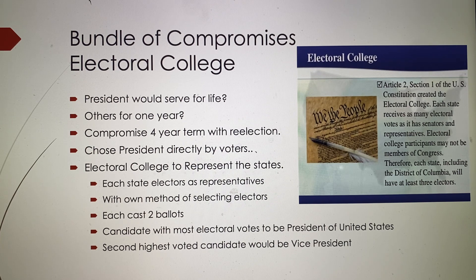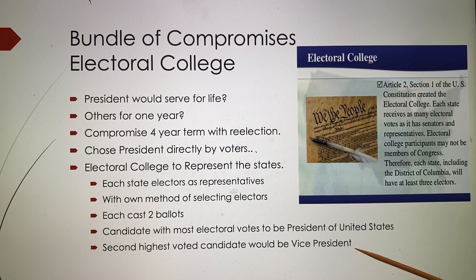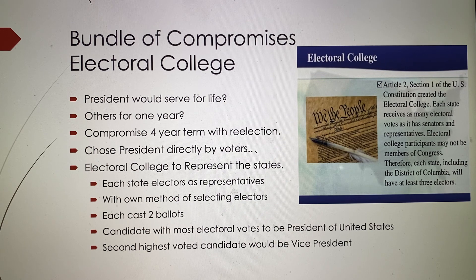The second-highest candidate would become vice president — a system that no longer works today. It led to situations like John Adams as president and Thomas Jefferson as vice president, two people from different parties who did not get along. But at the time, this wasn't a great concern since everyone knew George Washington would be president and supported him unanimously.